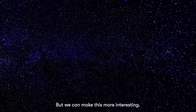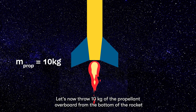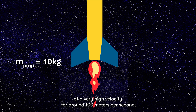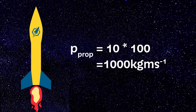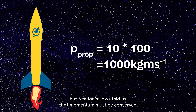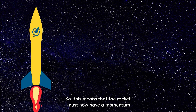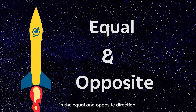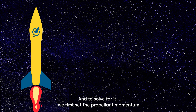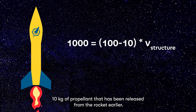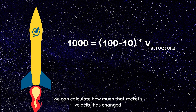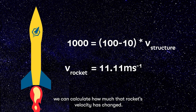But we can make this more interesting. Let's now throw 10 kg of the propellant overboard from the bottom of the rocket at a very high velocity of around 100 meters per second. The momentum of this propellant then becomes 10 × 100, or 1,000 kg·m/s. Newton's laws tell us that momentum must be conserved, so the rocket must now have a momentum in the equal and opposite direction. To solve for it, we first set the propellant momentum and the rocket momentum equal to one another, then subtract that 10 kg of propellant that has been released, and using this new mass, we can calculate how much the rocket's velocity has changed.